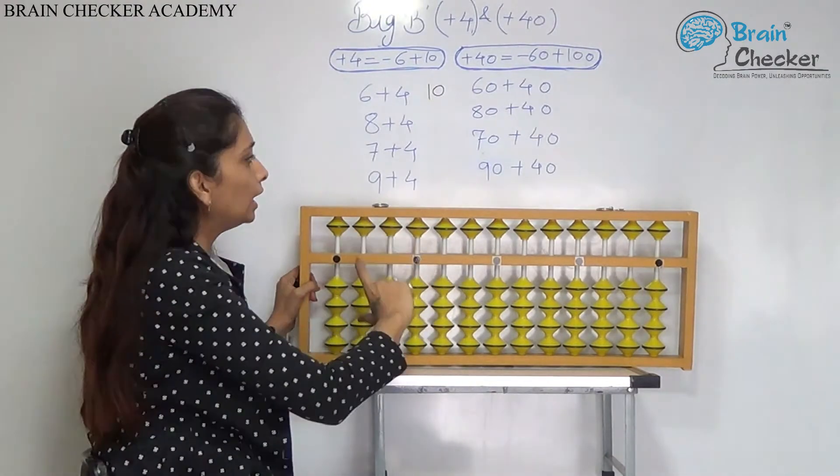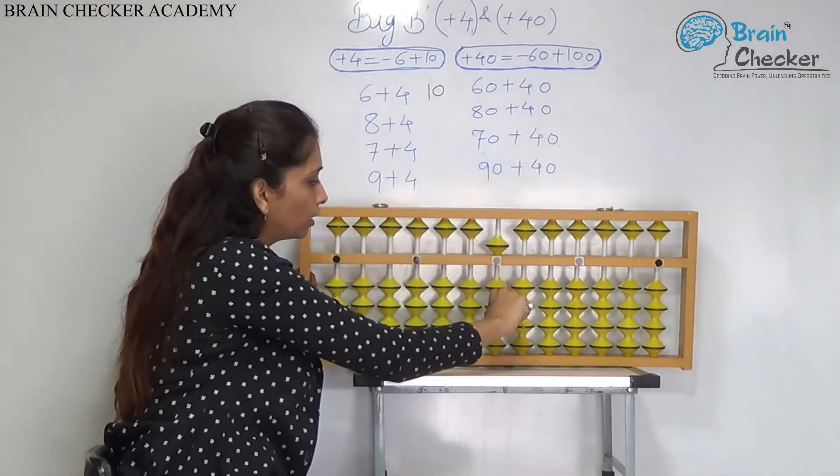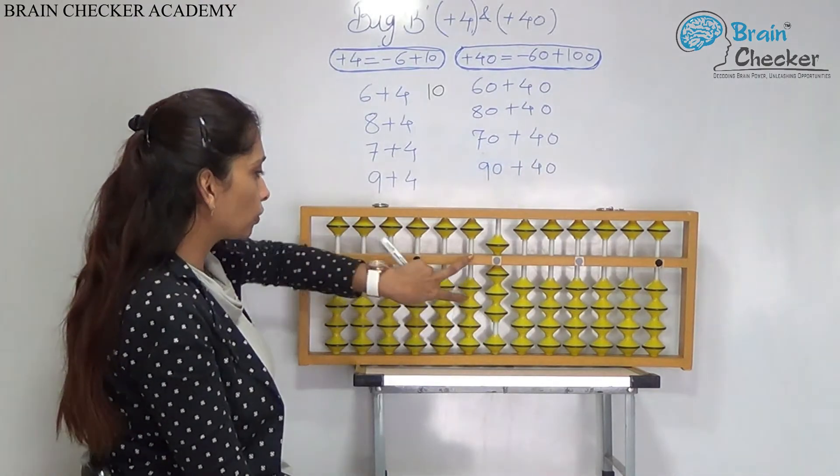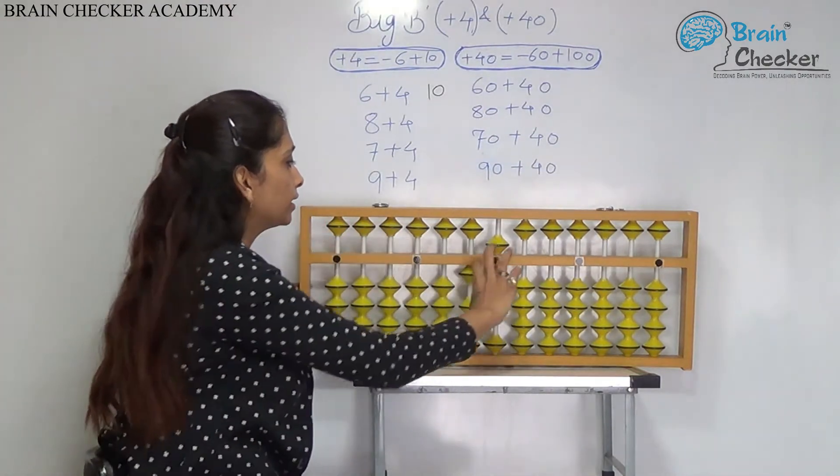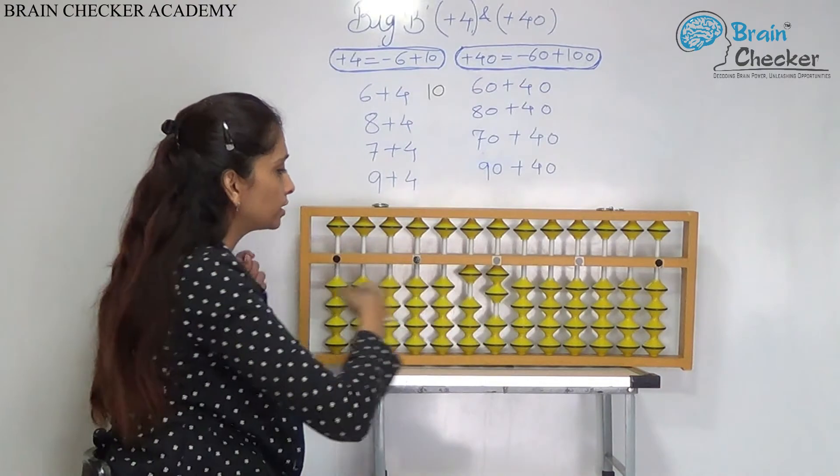Next, 8 add 4. Again, the formula is add 10 less 6. So, the answer is 12.